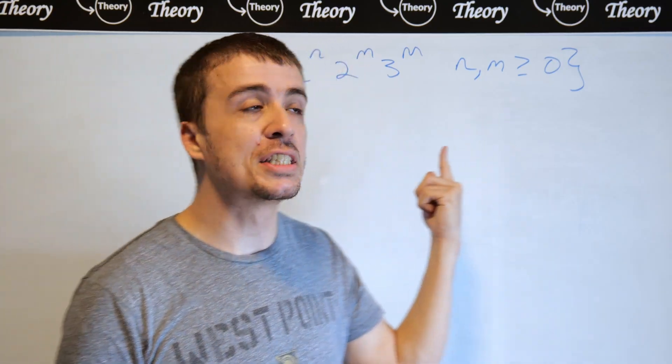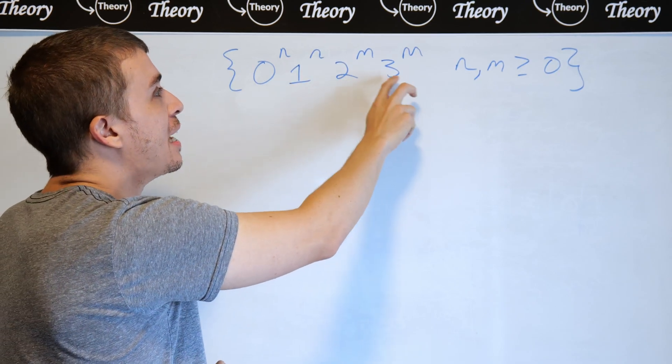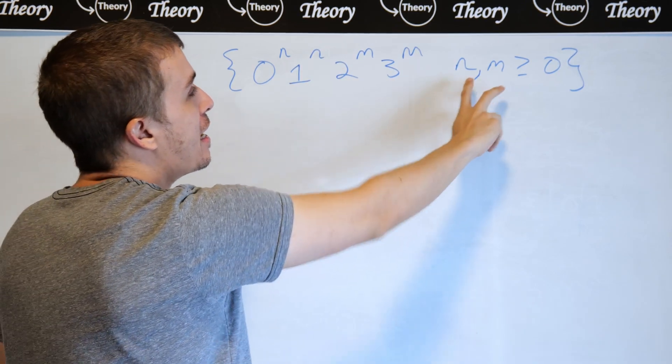Okay, so let's make a context-free grammar for this language: 0^n 1^n 2^m 3^m, where n and m are at least 0. I forgot to put the such that here.